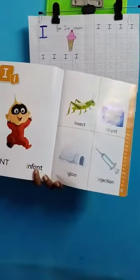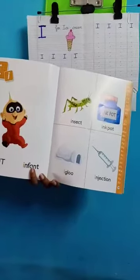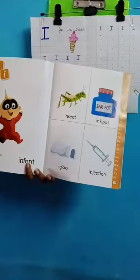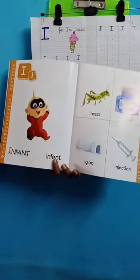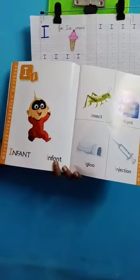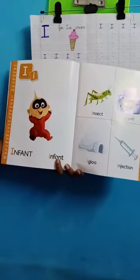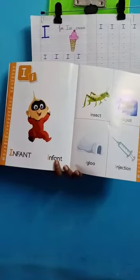So everyone take out your phonics book to page number 18. We have finished A to H in the phonics book, letters and pictures. So now we are going to do I.